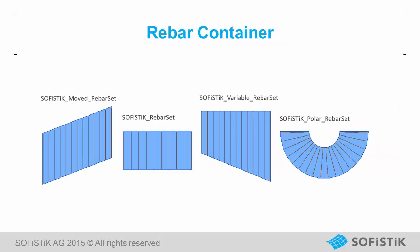By using Sophistic Reinforcement Detailing 2016, you can create reinforcement containers, which are shown here. Depending on the layout, rebars and rebar sets of the same shape and diameter can be grouped together. Containers called Moved Rebar Set, Rebar Set, Variable Rebar Set, or Polar Rebar Set will be created. If none of these layouts are detected, a general container will be placed.